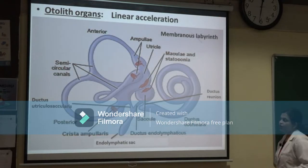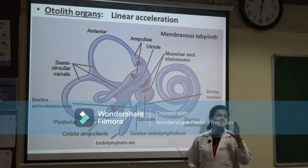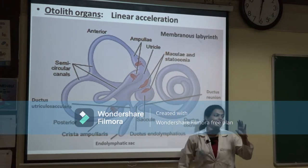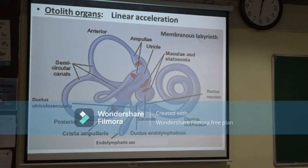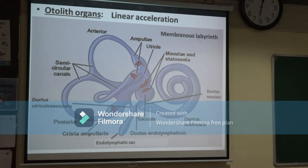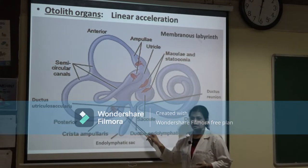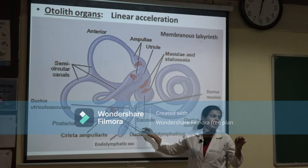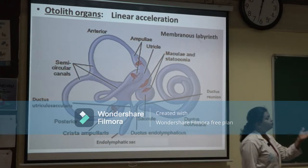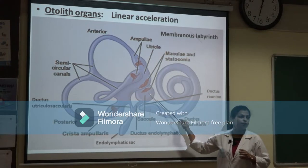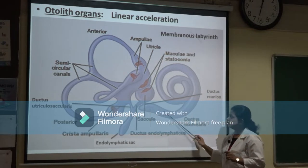Each semicircular canal has a dilated end called the ampulla. In the ampulla there is a receptor organ called the crista ampullaris. The crista ampullaris is present in the ampulla such that its cupola is in close proximity to the ampullar wall, and it opens into the utricle. The utricle is connected to the saccule, and the saccule is connected to the cochlea.